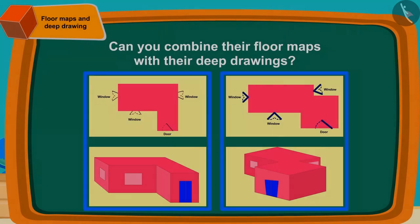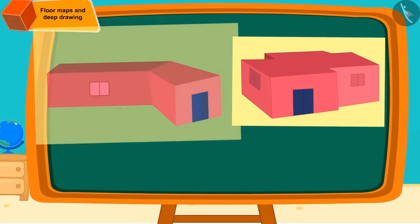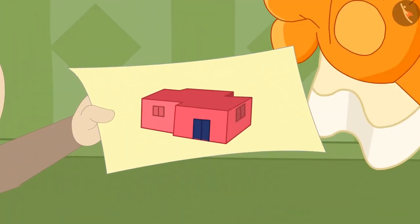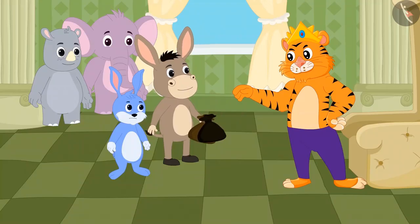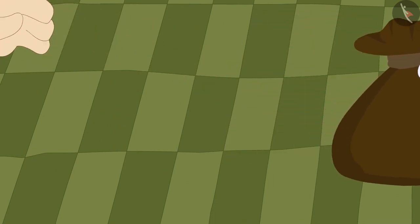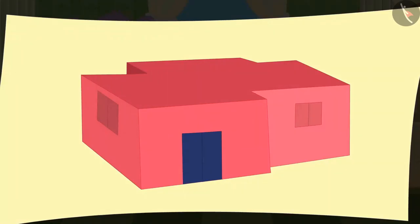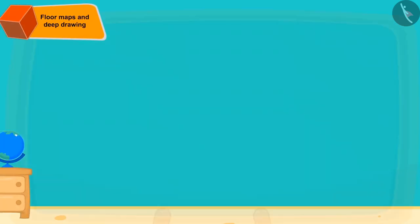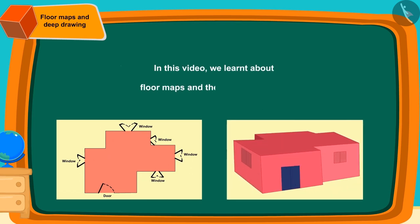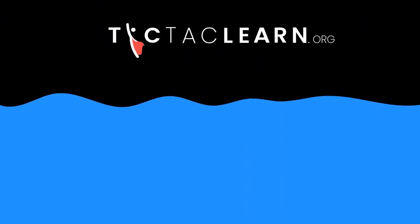The king saw many more designs, but out of all, he liked Bholla's design the best. At last, the king rewarded Bholla. Bholla immediately gave half of the reward to Bunny, because Bunny had helped by providing the floor map. In this video, we learned about the map of the floor and what deep drawings are.